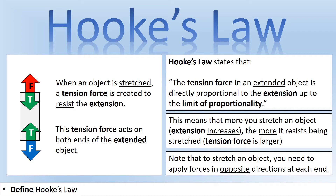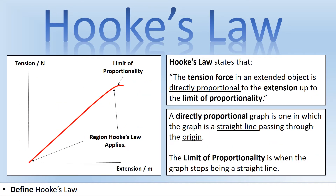What is the limit of proportionality? Looking at the graph, to start with it is a straight line passing through the origin — directly proportional. However, at a certain point the graph stops being a straight line and curves, probably because the material has started to plastically deform. That's when we stop applying Hooke's law; it applies only in the straight-line section, not where the spring has started to be permanently damaged.